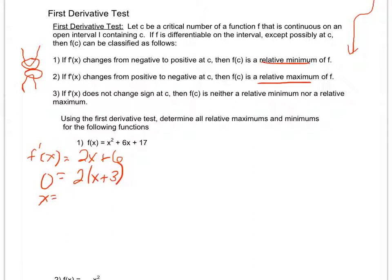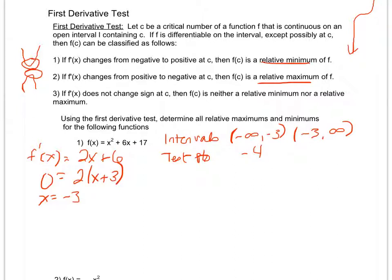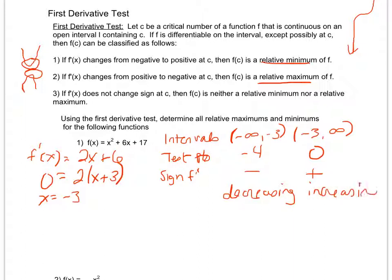The derivative equals zero when x equals negative three. So I set up my intervals: from negative infinity to negative three, and from negative three to infinity. I choose test points — negative four and zero. Plugging negative four in gives two times a negative, which is negative. Plugging zero in gives a positive. Therefore, the function is decreasing on negative infinity to negative three, and increasing on negative three to infinity.